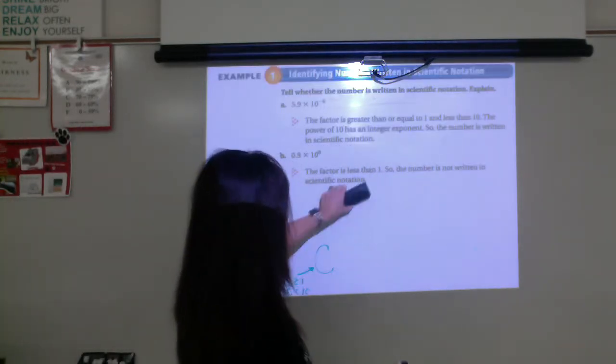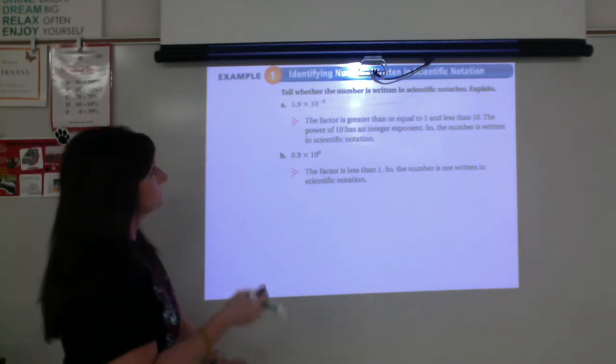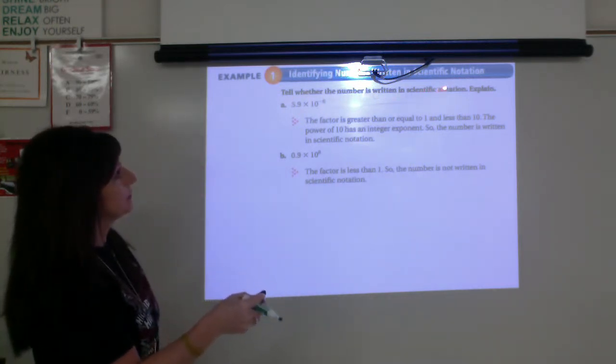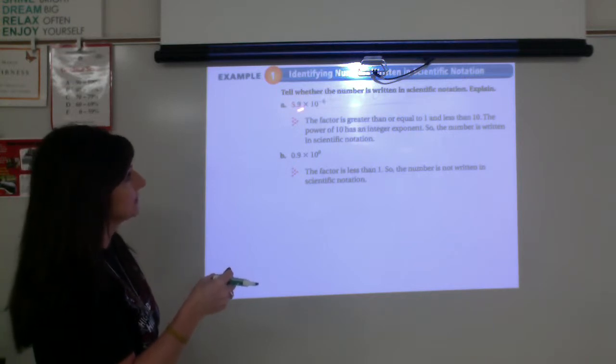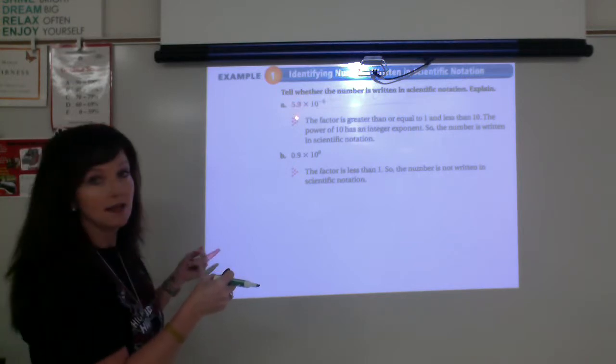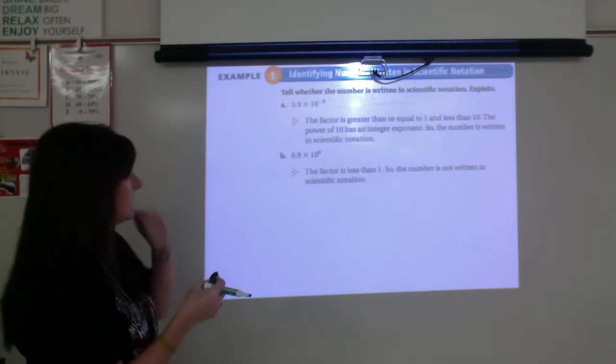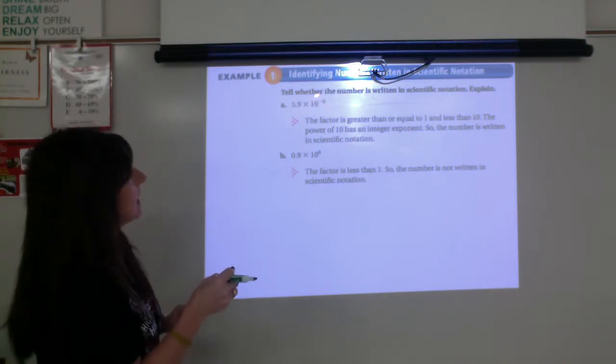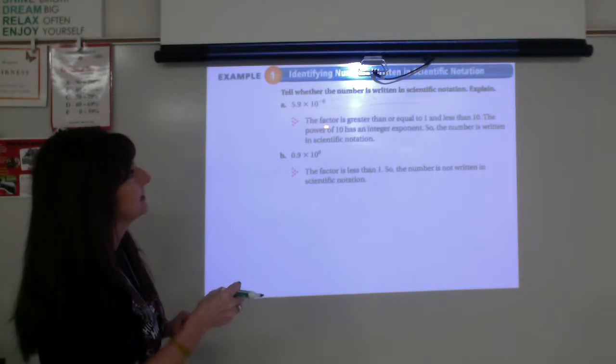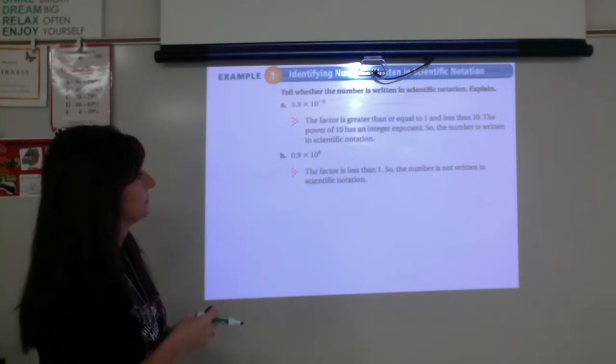So let's just take a look at the example that's given in your textbook. We want to tell whether the number is written in scientific notation. So the decimal part of the number, the c, is 5.9. It is greater than 1, less than 10. So it definitely satisfies that condition. And our exponent is an integer. So we would say yes, it is written in scientific notation.